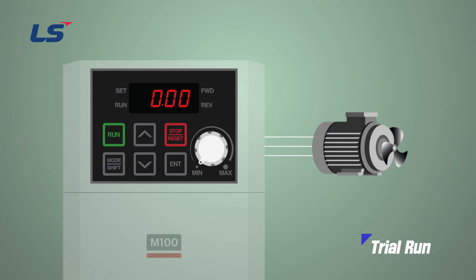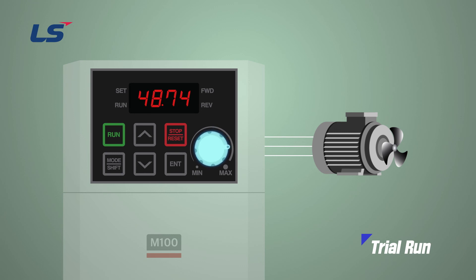Return to the initial screen and watch the frequency change by turning the built-in volume. When the volume points to minimum, it displays 0 Hz, and when it points to maximum, it displays the maximum frequency of 60 Hz.